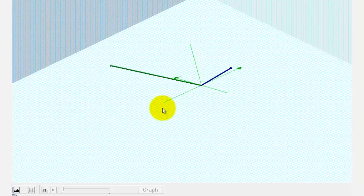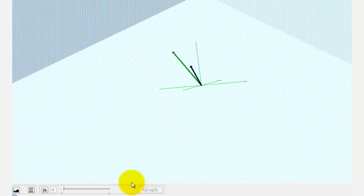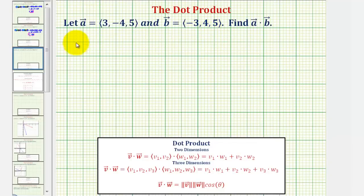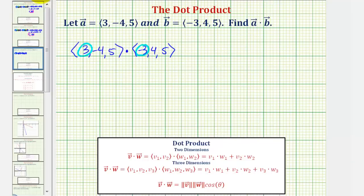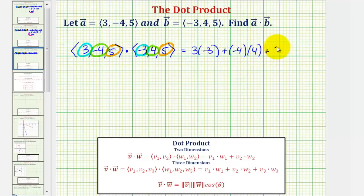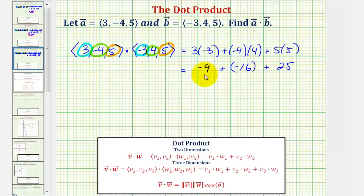We have an obtuse angle between these two vectors. Let's take a look at one more example with two different vectors. Vector a dotted with vector b: positive three times negative three, plus negative four times positive four, plus five times five. So we have negative nine plus negative sixteen plus twenty-five, which equals zero.